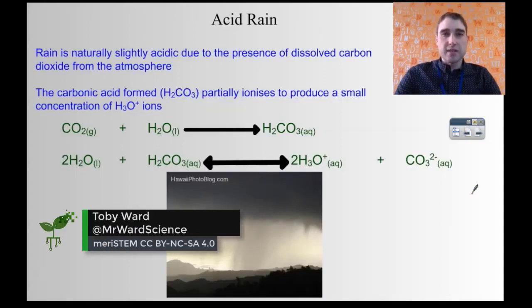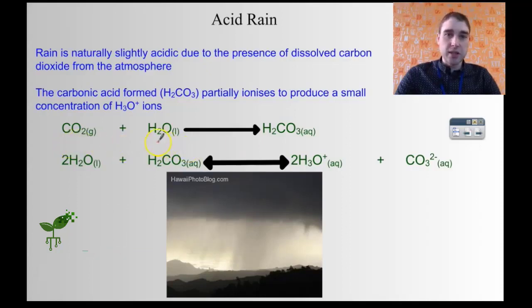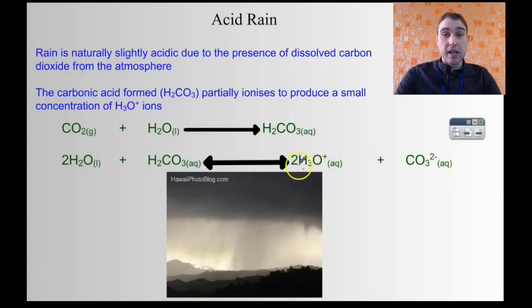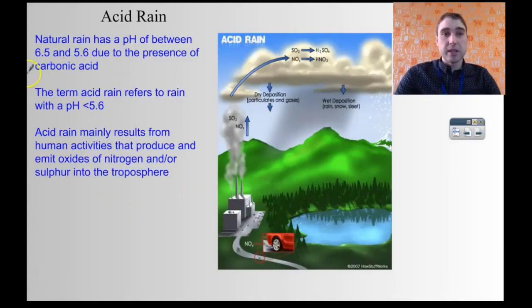Normal rain is typically a little bit acidic because of carbon dioxide in the atmosphere. The carbon dioxide dissolves in the water in the atmosphere producing carbonic acid. Carbonic acid can then ionize to produce hydronium ions and carbonate ions. The increase in concentration of hydronium ions reduces the pH and makes it slightly acidic. Natural rain is normally between 5.6 and 6.5 pH because of that carbonic acid.